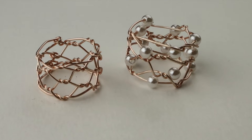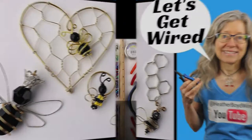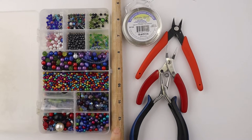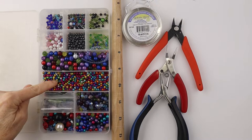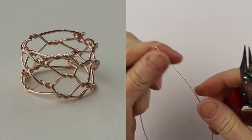Today I'm making a basket weave ring inspired by my beehive tutorial. I'll link it below. You are going to need your tools, 22 gauge wire, a ring mandrel, and 4 millimeter beads.